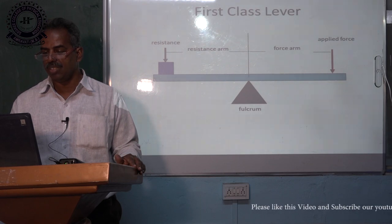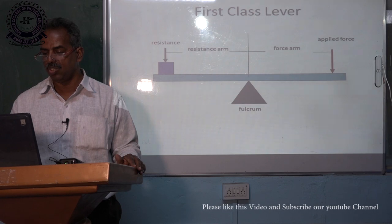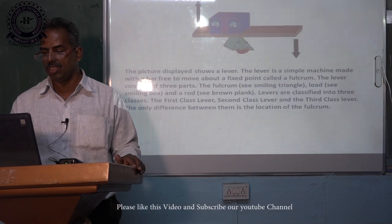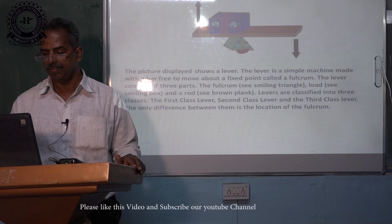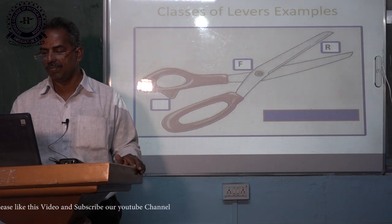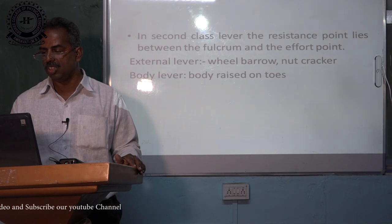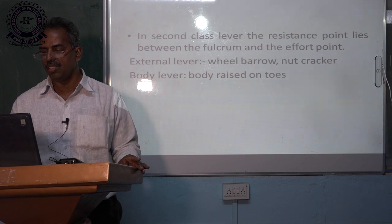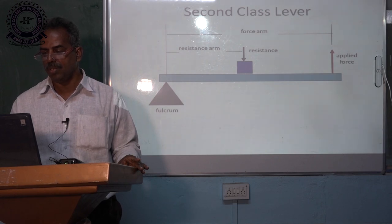Here a diagram is given showing the resistance, resistance arm, force arm, applied force, and fulcrum. An example of a first class lever is shown, illustrating how the force is applied and how the resistance is acting. The example of scissors is shown as an external lever. In a second class lever, the resistance point lies between the fulcrum and the effort point. The difference between first and second class levers is the position of the fulcrum — in first class it is in the middle; in second class, the resistance is in the middle.